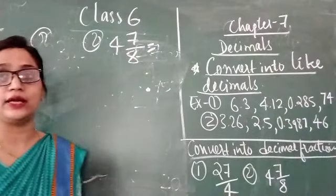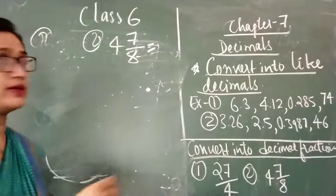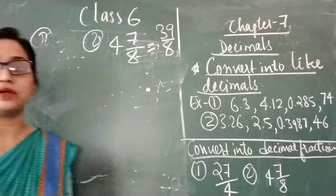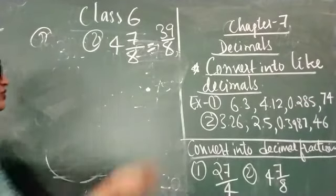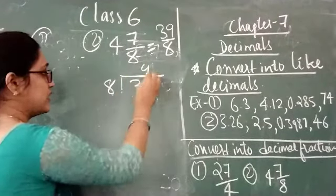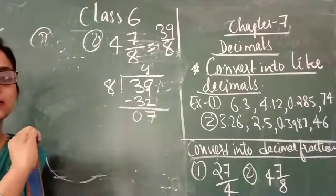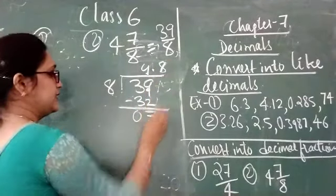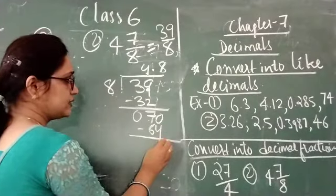First convert 4 and 7 upon 8 into an improper fraction: 4 times 8 is 32, 32 plus 7 is 39, giving 39 upon 8. Now same as before, we divide 39 by 8. 8 fours are 32, remainder is 7. Put a decimal point — it becomes 70. 8 eights are 64, 70 minus 64 is 6.